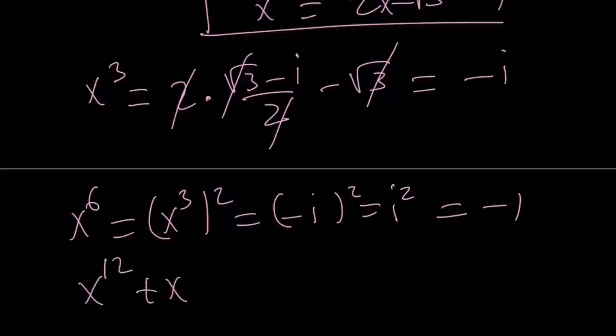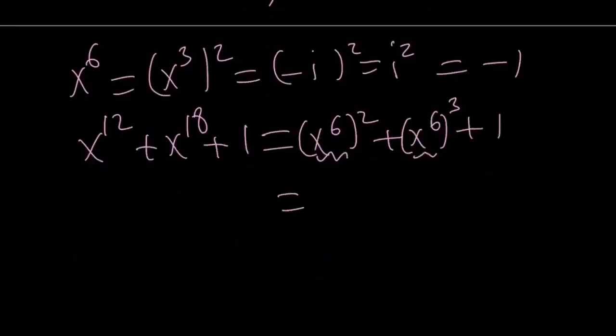So x to the 12th plus x to the 18th plus 1. x to the 12th is x to the 6th squared, x to the 18th is x to the 6th to the 3rd, plus 1. This is negative 1, this is negative 1. 1 minus 1 plus 1 gives us 1 again, and this brings us to the end of this video.